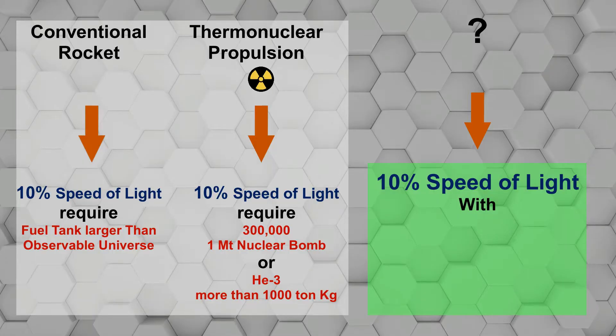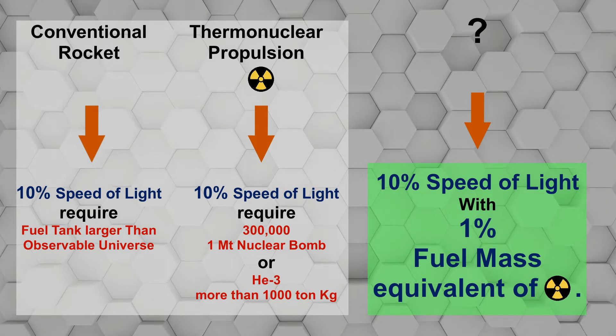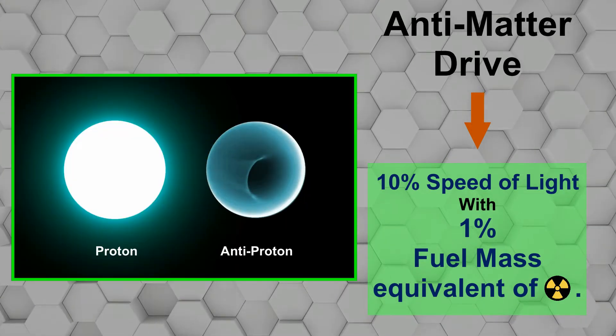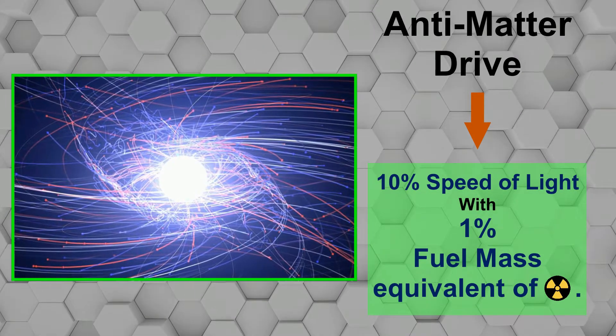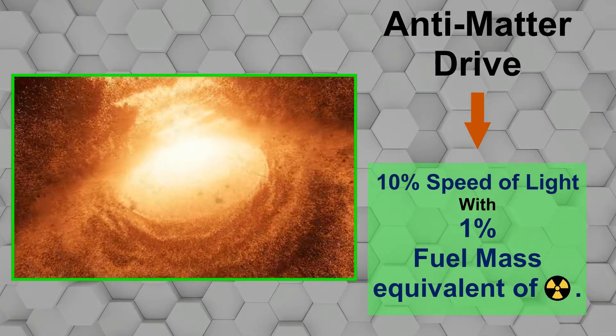But what if we can achieve 10% light speed with only 1% of fuel mass as compared to thermonuclear fuel? This is the very idea behind antimatter drive. When antimatter comes in contact with matter, the mass of both is converted into energy in an extremely violent explosion, which makes nuclear explosion look like a small firecracker.